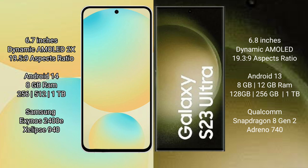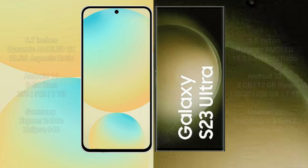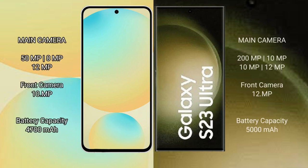Samsung Galaxy S23 Ultra comes with 8GB to 12GB RAM and 256GB to 1TB internal storage. It features the Qualcomm Snapdragon 8 Gen 2 processor and Adreno 740 GPU.